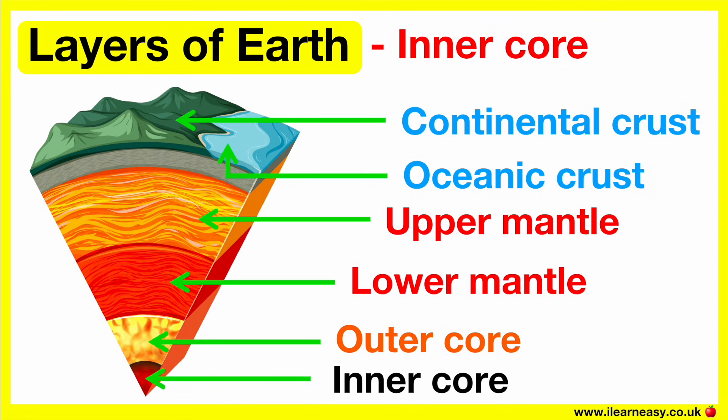The inner core. The inner core is right in the center of the Earth. It's the hottest part of the Earth — it's nearly as hot as the surface of the Sun. The extreme pressure in the inner core is what makes it solid. The inner core is also made up of iron and nickel, just like the outer core. However, because the inner core is so hot and there's extreme pressure, this makes it solid.